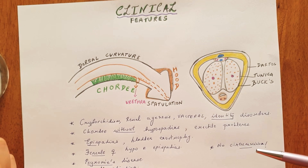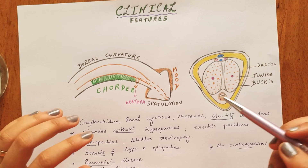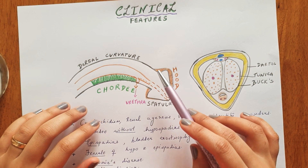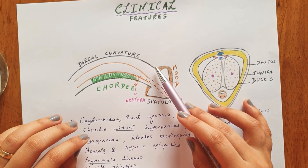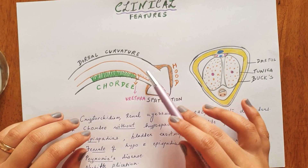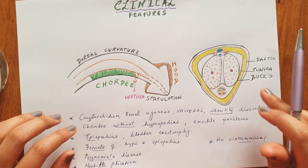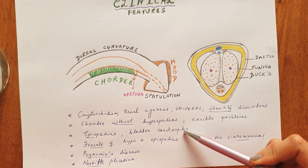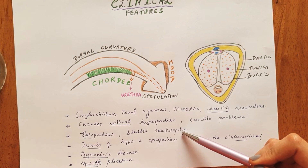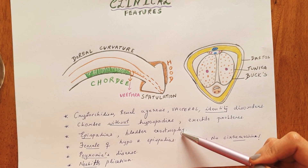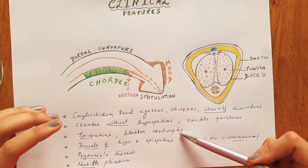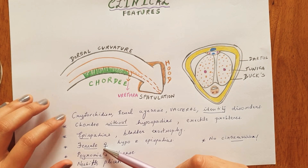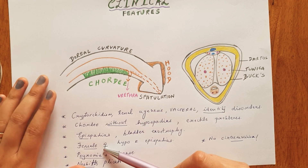There is another condition called epispadias, wherein the urethral opening is abnormally found on the dorsal surface of the penile region, associated with ventral curvature. It is further seen with conditions like bladder exstrophy and diastasis of the pubic bone, which are severe and require surgical correction. Epispadias can also be seen in females, and all these cases are surgically corrected.